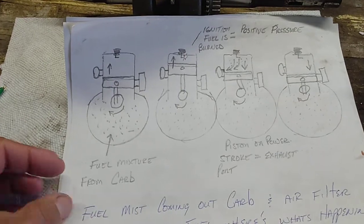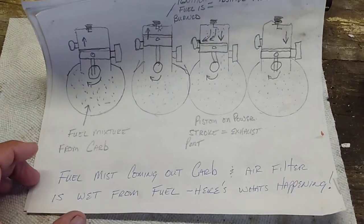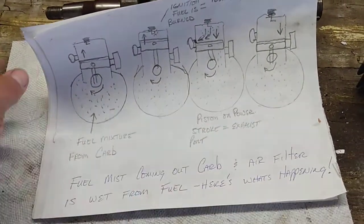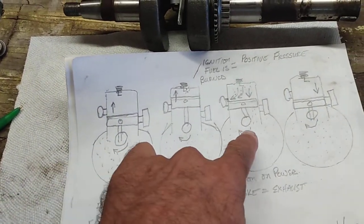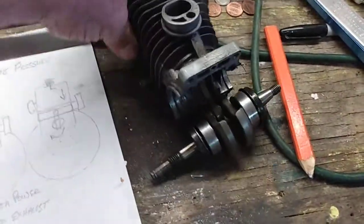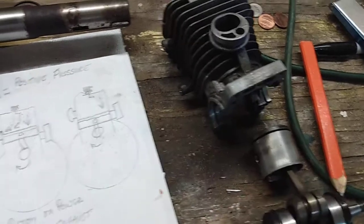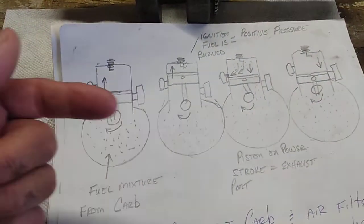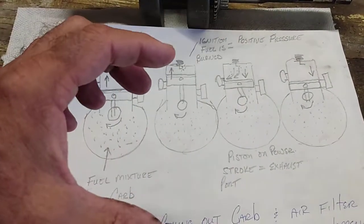And the engine is just bogging down. So I'm going to explain with all my highly sophisticated drawings here, and then I tore apart a CS 310 to actually show you what's happening. Why fuel mist is actually coming out the carburetor and usually it'll collect up into that air filter.